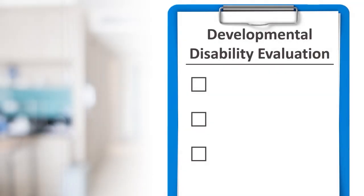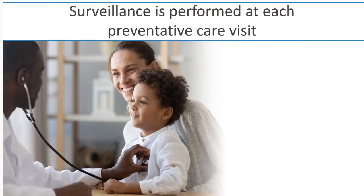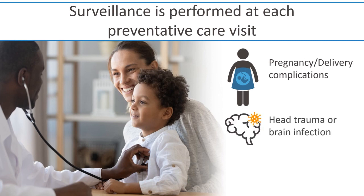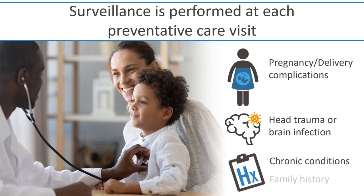There are three steps to evaluate for these conditions. Step one is surveillance. This is performed longitudinally at each preventative care visit. The pediatrician inquires about risk factors including pregnancy and delivery complications, prior head trauma or brain infection, presence of chronic medical conditions, and family history of developmental disabilities. A physical examination and observation for expected milestones is also an important part of surveillance.